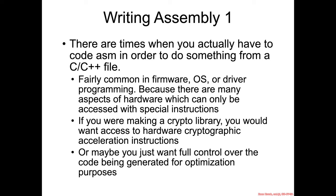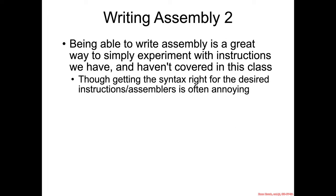Or for instance if you were writing a cryptographic library, you might want access to some accelerated crypto assembly instructions that the particular architecture might make available. Intel has such instructions, as do other platforms. Or maybe you're just trying to really super performance-optimize some code and you want full control and you want to be able to run some tests and find out what the fastest way to run a particular function is. These are all reasons why you might go down to the assembly level.